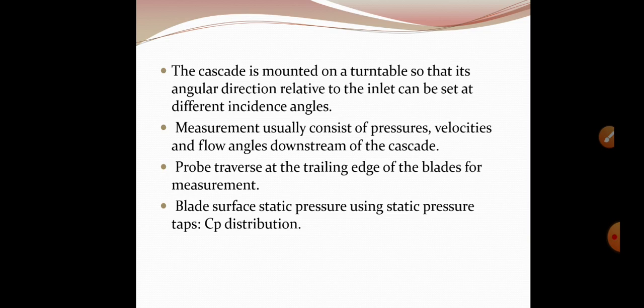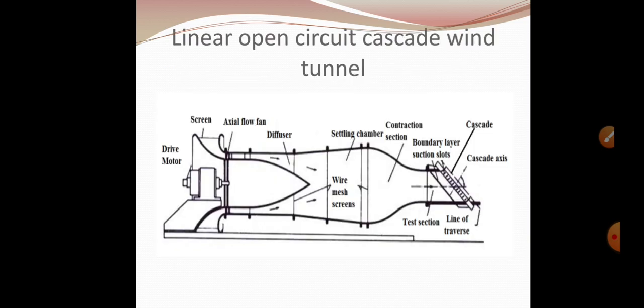Probe traverse at the trailing edge of the blades for measurement, blade surface static pressure using static pressure taps, coefficient of pressure distribution. Here we can see a schematic diagram of linear open circuit cascade wind tunnel.